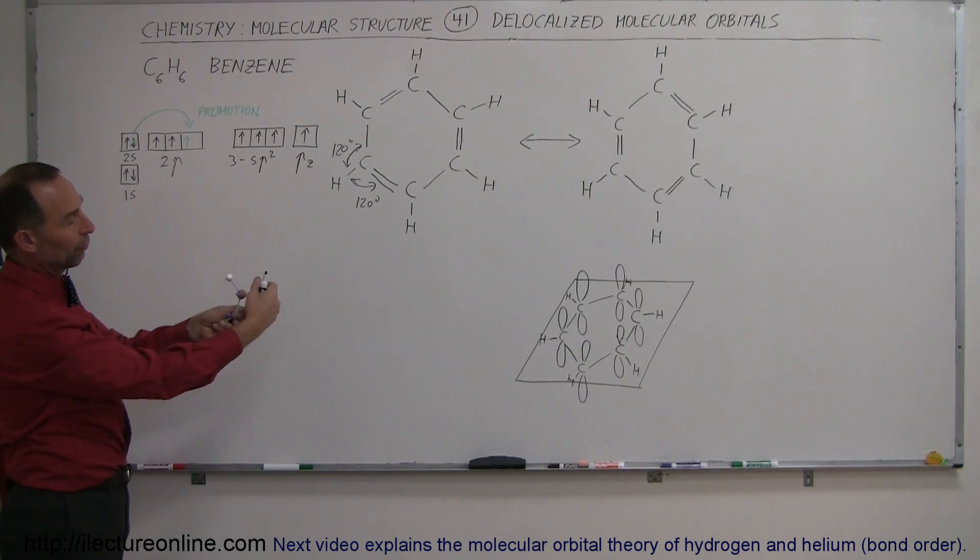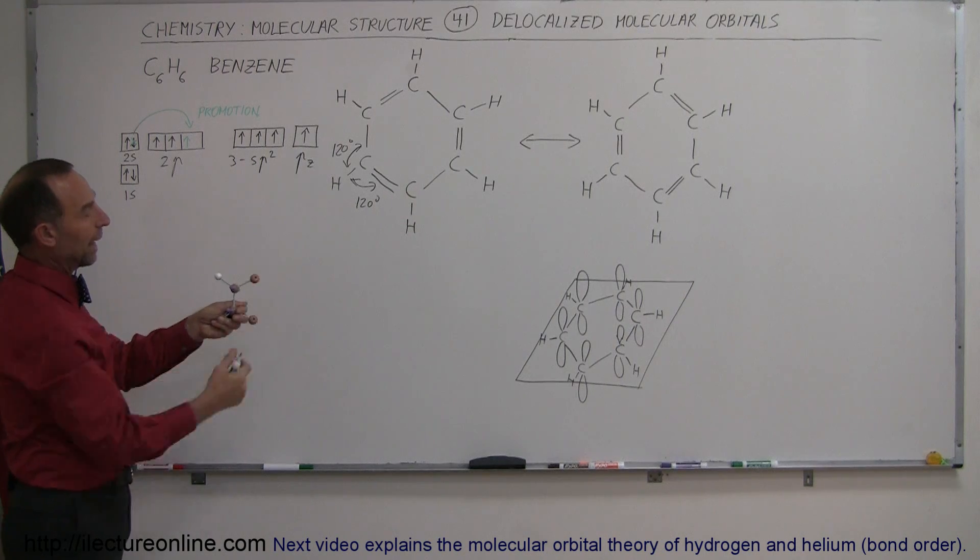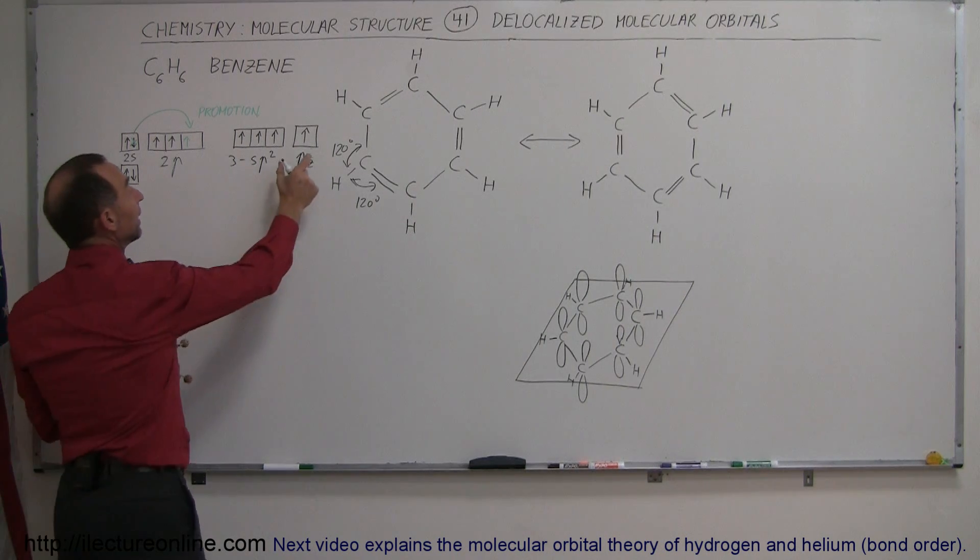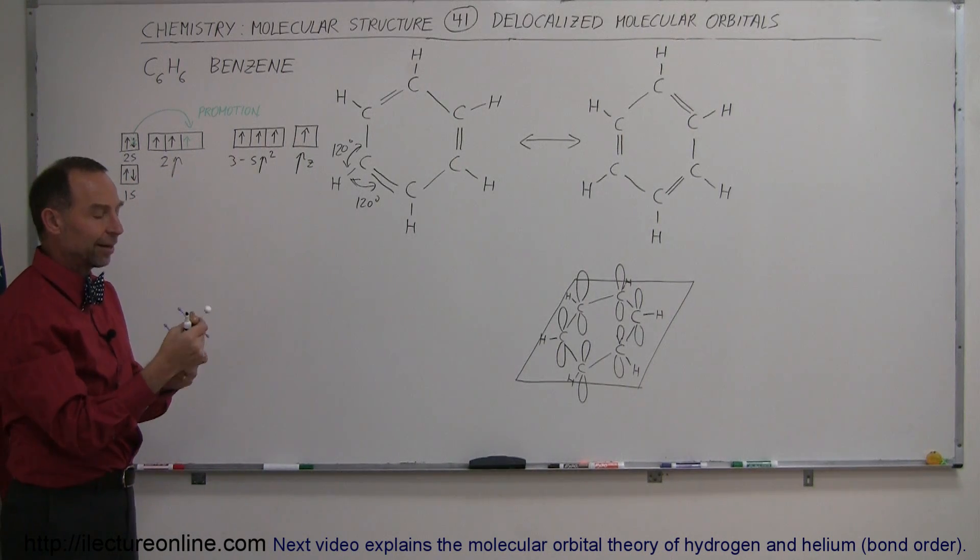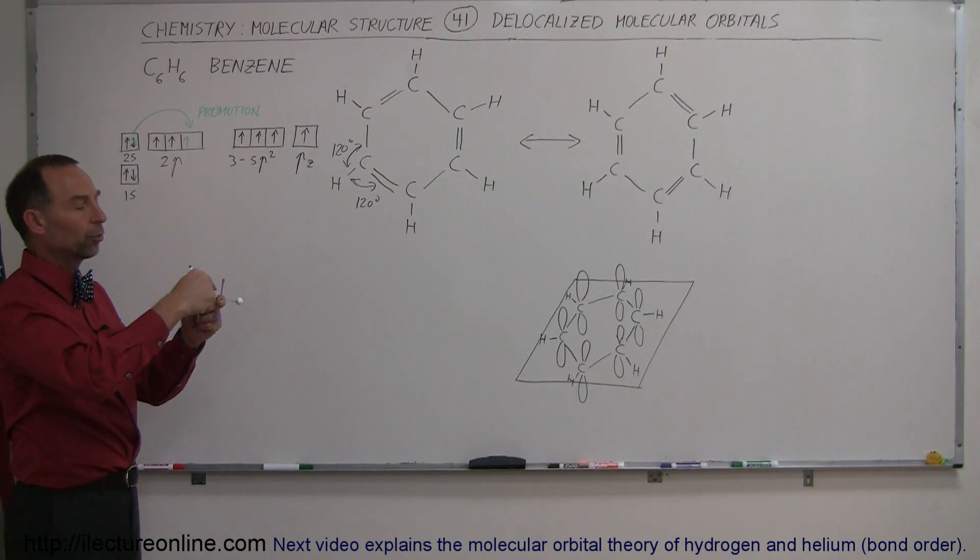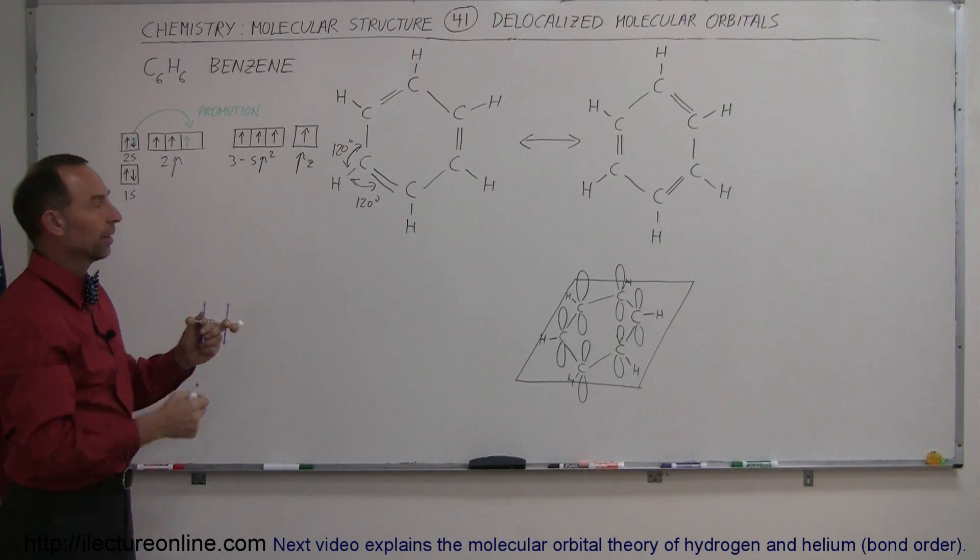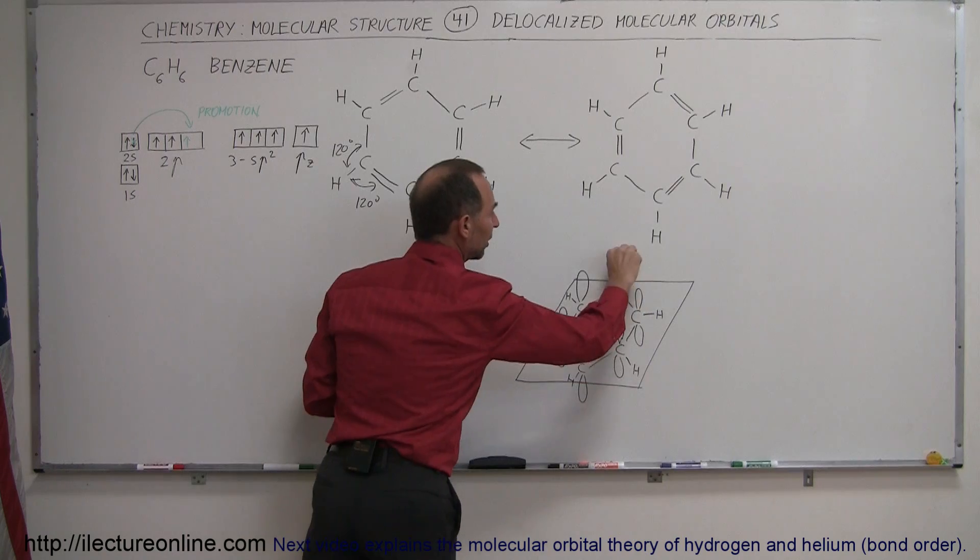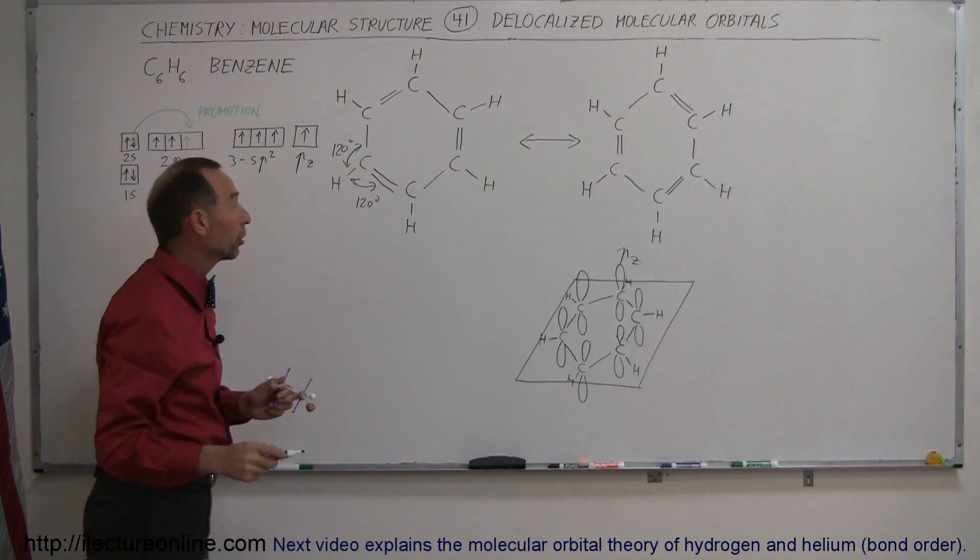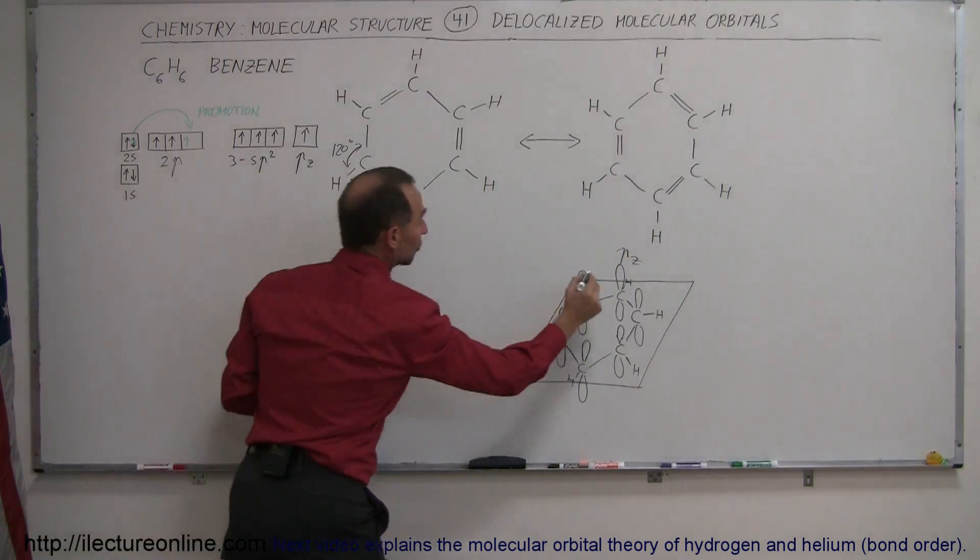But then the last orbital, the p in the z direction, is not hybridized. So it stays there and forms two lobes, one sticking up and one sticking down. Just as I try to illustrate here, around each carbon has a set of lobes. These are the pz orbitals and they all contain a single electron.